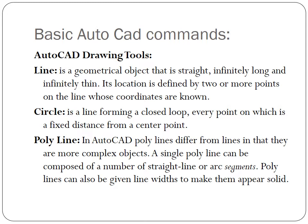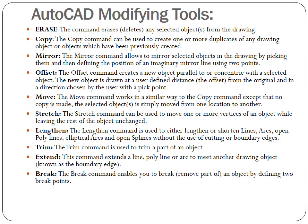Different tools of AutoCAD have been used to draw public buildings. Among drawing tools, lines, circles, and polylines are basically used. Among the modifying tools, erase, copy, mirror, offset, move, stretch, lengthen, trim, extend, and break have been commonly used, which we have already discussed in the practice sessions of AutoCAD.